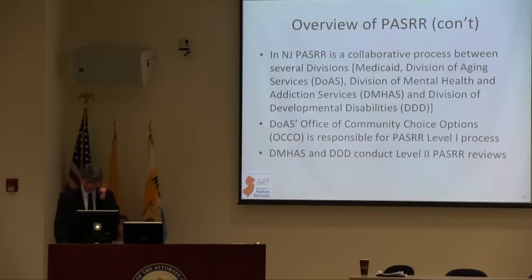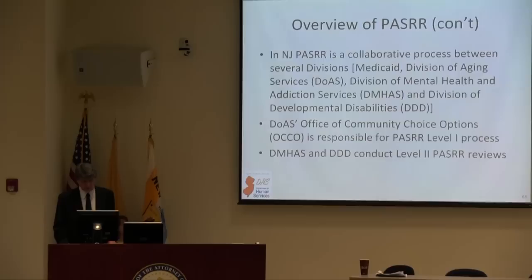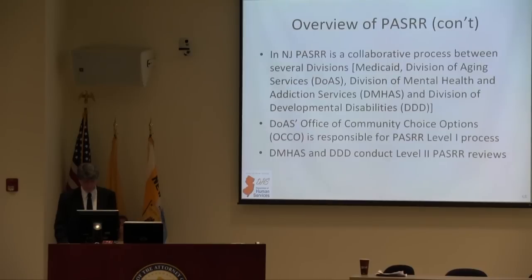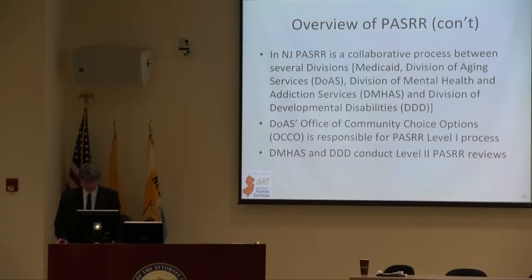PASR is a collaborative process between three divisions: the Division of Aging Services through the OCO, the Division of Mental Health and Addiction, and the Division of Developmental Disabilities. There are different levels of PASR — Level 1 and Level 2.